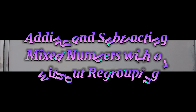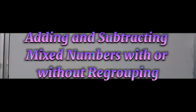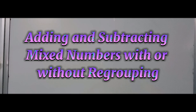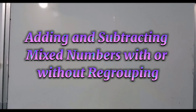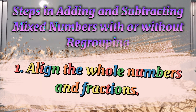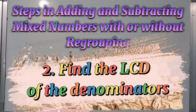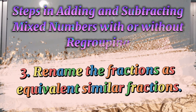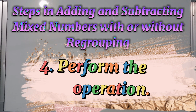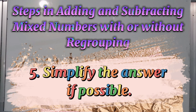Let's talk about adding and subtracting mixed numbers with or without regrouping. First, align the fractions and the whole numbers. Second, find the LCD of the denominators. Third, rename the fractions as equivalent similar fractions. Fourth, perform the operation. And the last one, simplify the answer if possible.